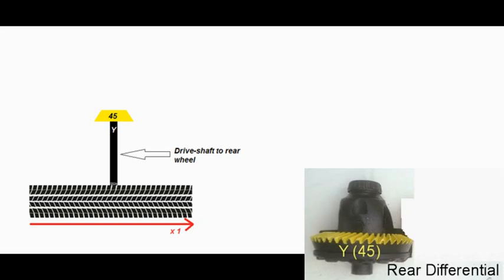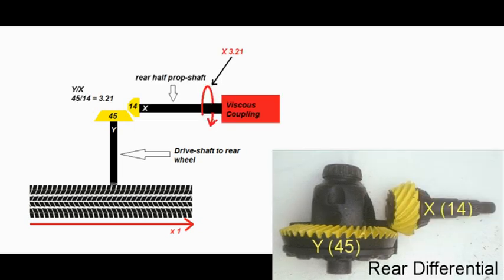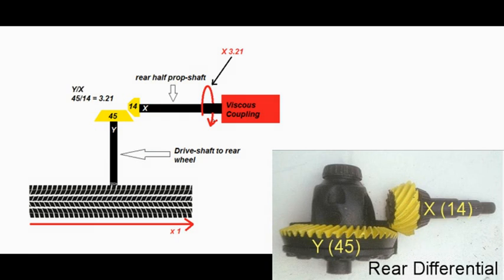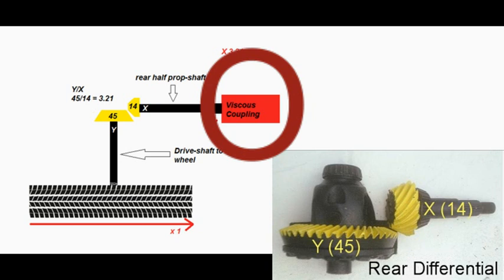The photograph is of the rear differential. The rear wheel is directly connected to the rear drive shaft and therefore, for every turn of the wheel, the yellow gear Y with 45 teeth also turns once. The yellow gear Y is meshed with yellow gear X that has 14 teeth. It also turns the drive through 90 degrees into the viscous coupling.